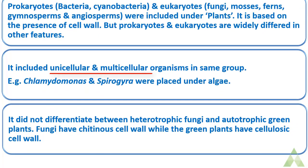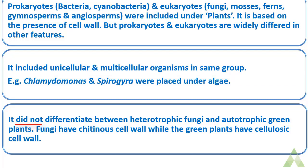Additionally, the two-kingdom system included unicellular and multicellular organisms in one group — we need multicellular in one group and unicellular in another to avoid chaos. Furthermore, it did not differentiate between heterotrophic fungi and autotrophic green plants. Fungi have a chitinous cell wall while green plants have a cellulose cell wall, creating further variation and confusion.